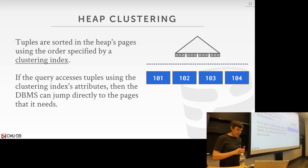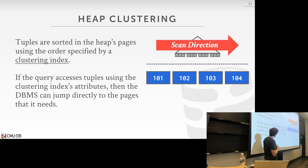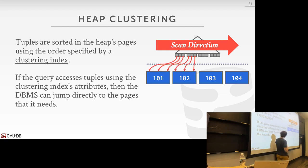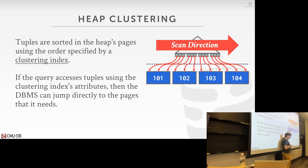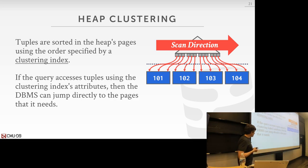Heap clustering, or clustered indexes, allows us to scan along the leaf nodes of the index and fetch data in sequential order because the tuples are ordered in the pages in the same way they're ordered in the index. We've already covered this, so there's not much more to add.